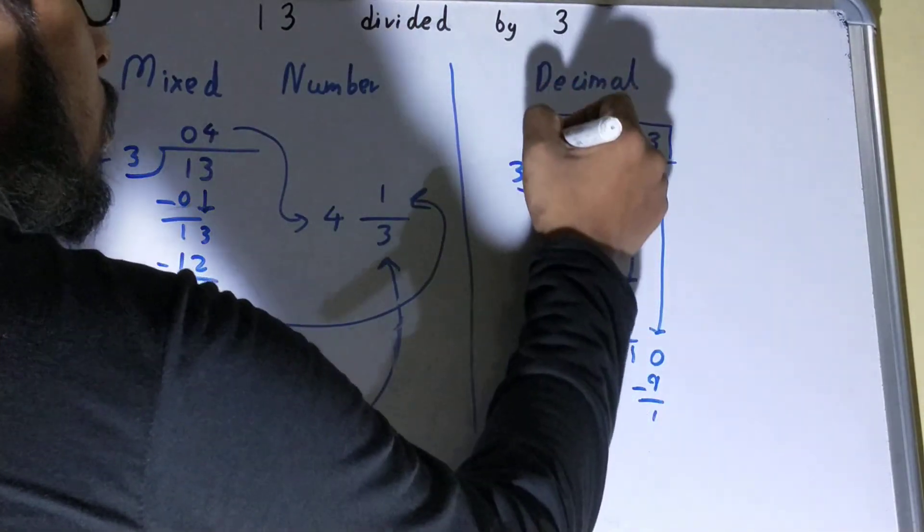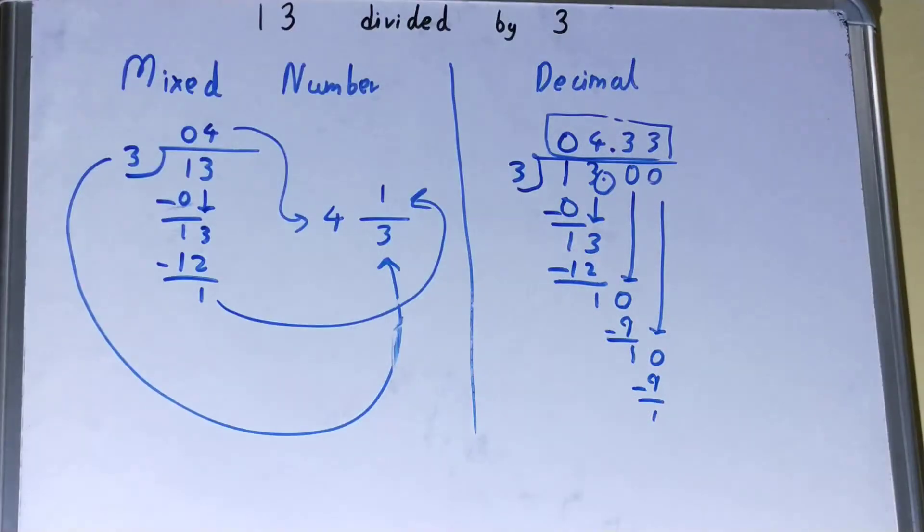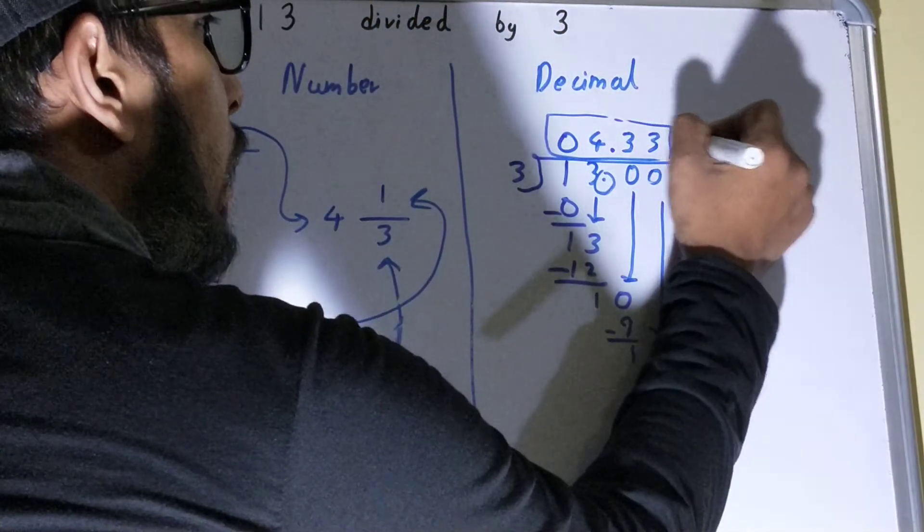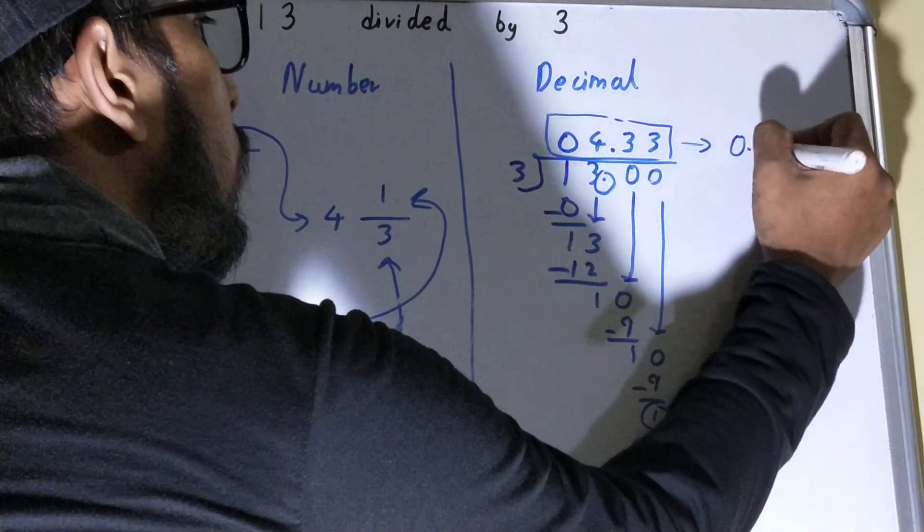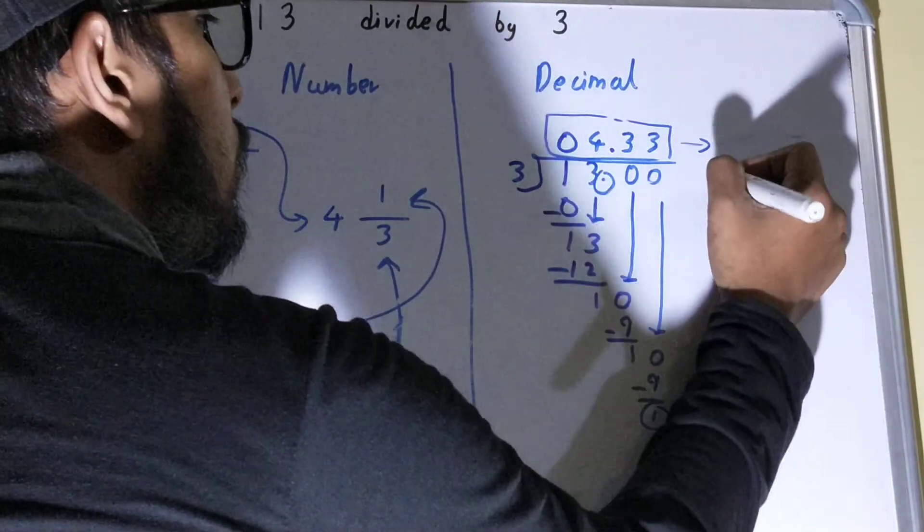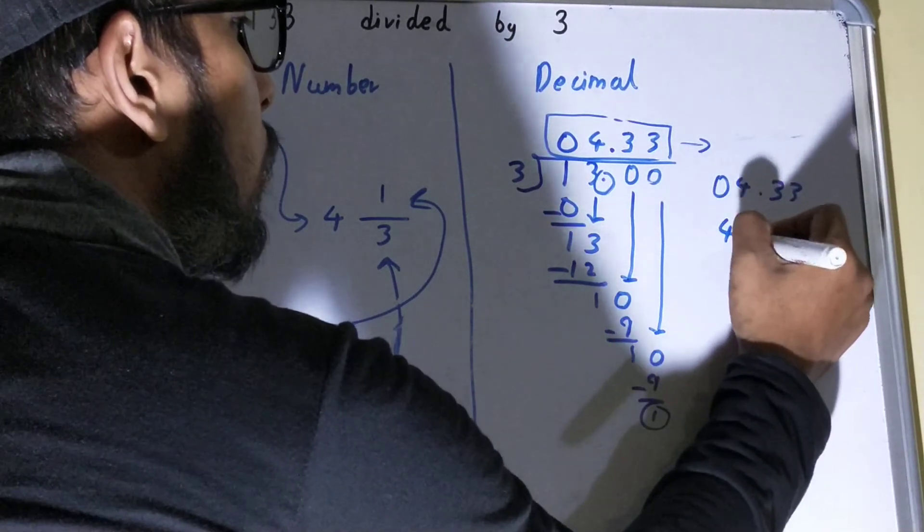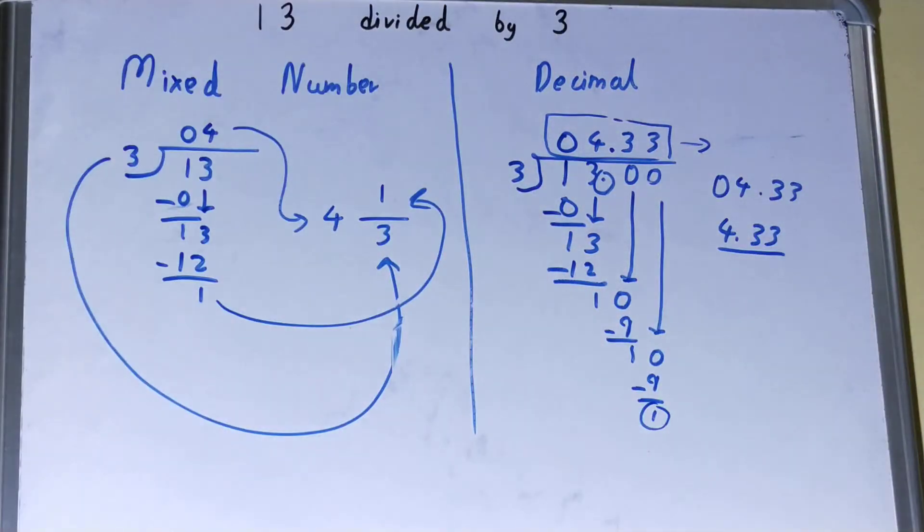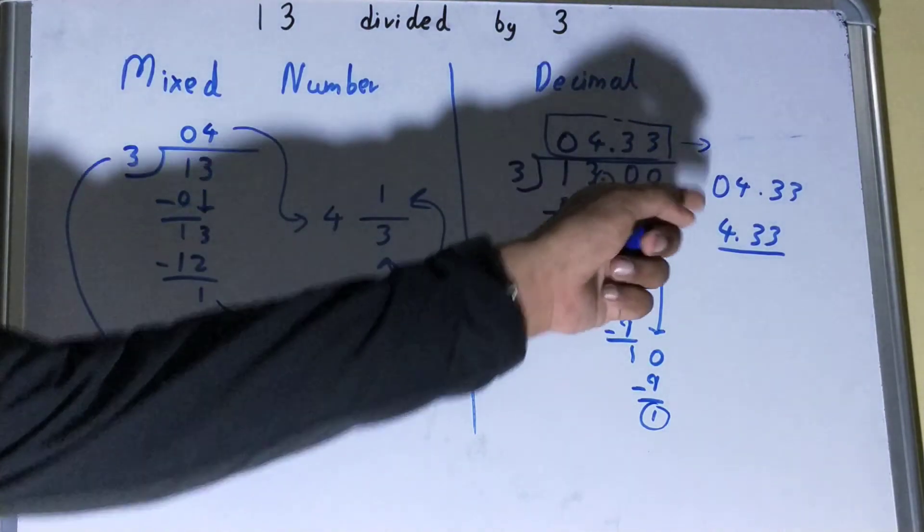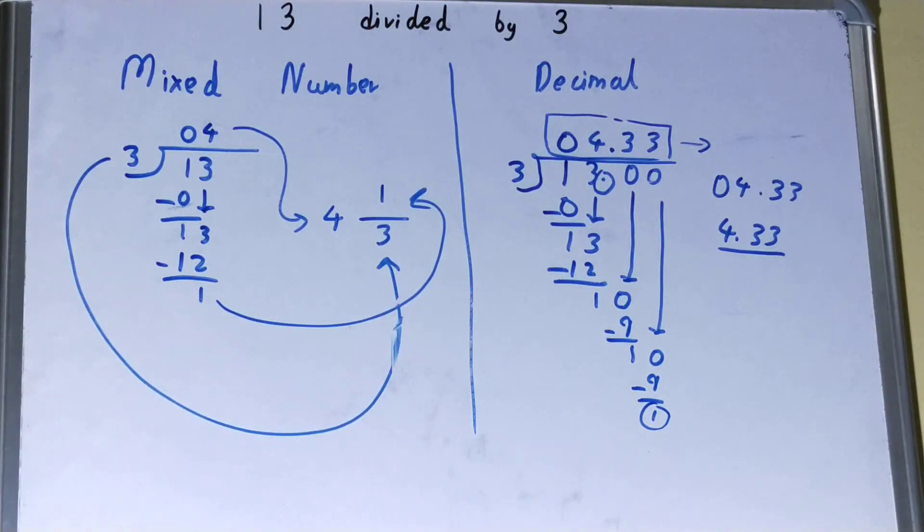Once you find till two decimal places, you need to stop right there. You don't need to see what your remainder is. Your answer will be 4.33. If you are asked to find more decimal places, you can add more zeros and do the same process. If you like the video, please click the like button and subscribe. Thanks for watching.